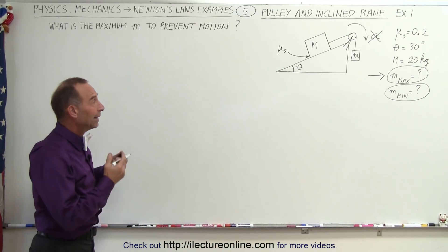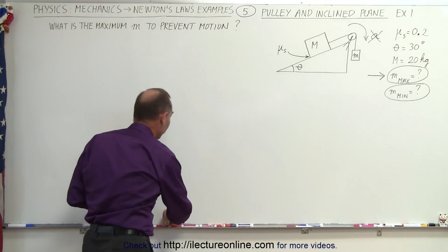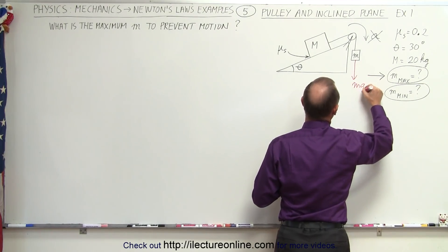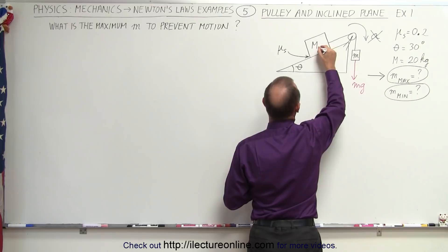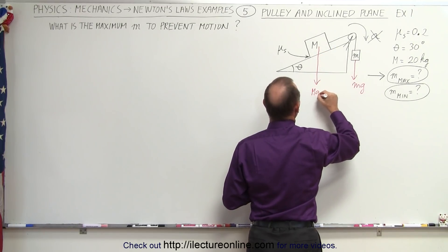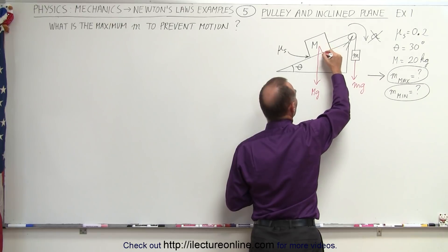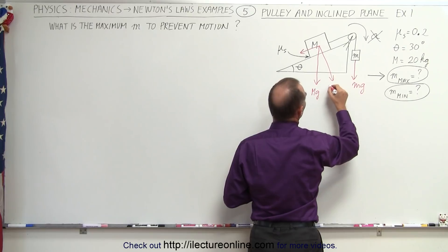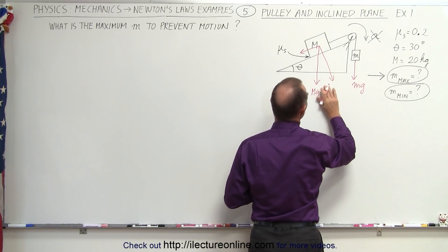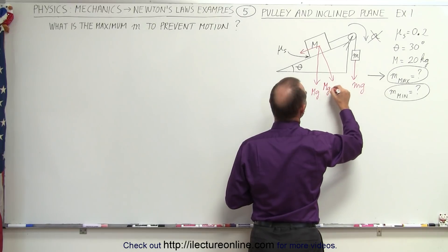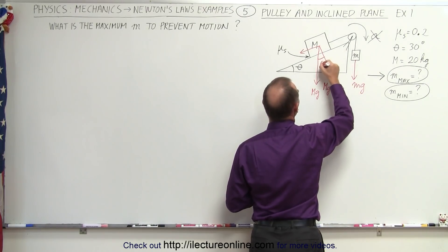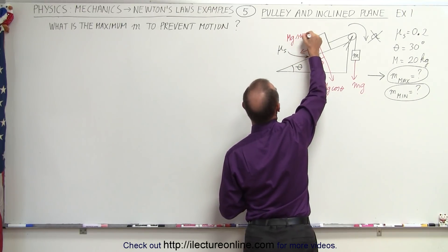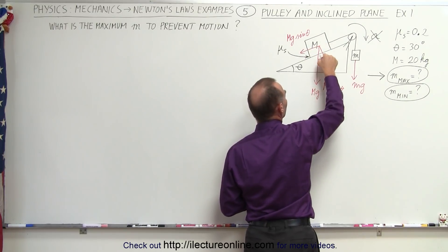To do that, we identify all the forces acting on the system. We have the small mg pulling this way, which tries to accelerate the system. We have the large mg pulling in this direction, and since it's on the inclined plane, we divide it into two components: the perpendicular component and the component along the plane — large Mg·cosθ and large Mg·sinθ, since sinθ is the component opposite the angle.